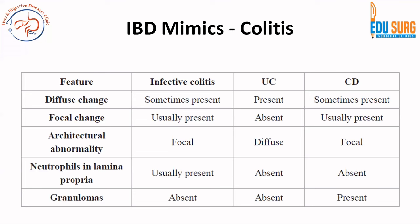Coming to infective colitis versus ulcerative colitis and Crohn's disease: neutrophils in the lamina propria are seen only in infective colitis — if you have extensive neutrophils in the lamina propria, this is usually infective colitis and not ulcerative colitis. Granulomas are classically present in Crohn's disease but not in ulcerative colitis or infective colitis. Both infection and Crohn's disease have focal change, whereas ulcerative colitis has diffuse change. If you remember these points together with clinical history, imaging, endoscopy, and biopsy findings, you can achieve a diagnosis in most cases.